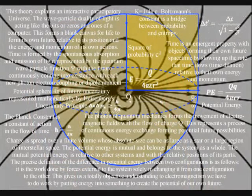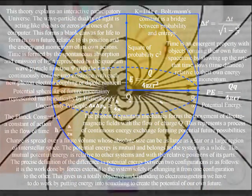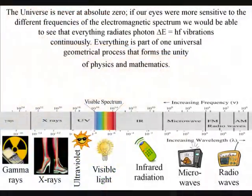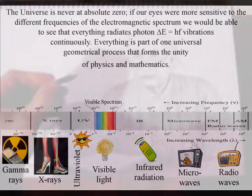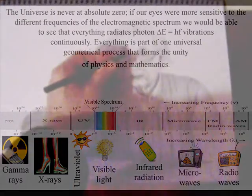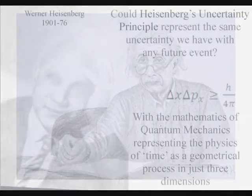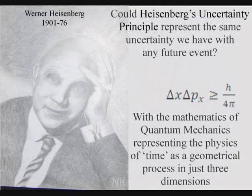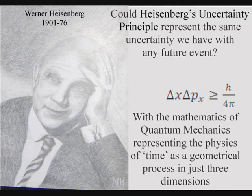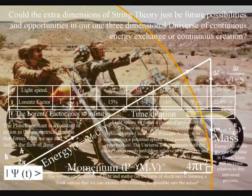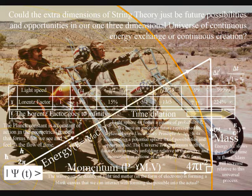This forms wave particle duality. In this theory the wave particle duality of light and matter in the form of electrons is forming a blank canvas that we can interact with forming the possible into the actual. This can be seen mathematically with Heisenberg's uncertainty principle of quantum mechanics representing the uncertainty of everyday life at the smallest scale of this process.